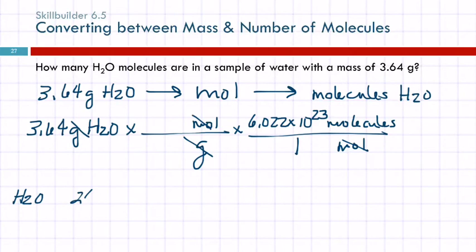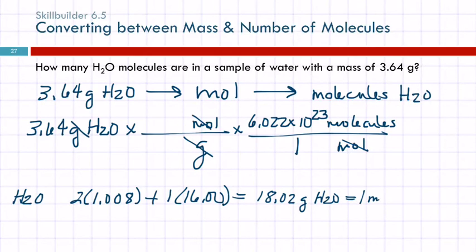Then for grams to moles, we need the molar mass again. So for H2O, we've got 2 times 1.008 plus 1 times 16, and that gives us 18.02. Grams of water equals 1 mole of water. So 1 mole, 18.02 grams.